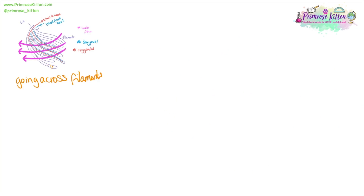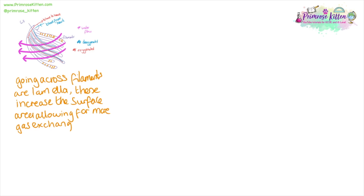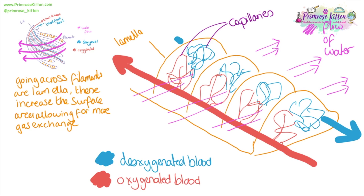Going across each filament are lamella. These are there to increase the surface area, which allows for more gas exchange to take place. Here we have a close-up of the lamella — the filament is this part here and the lamella are the ones going across here.